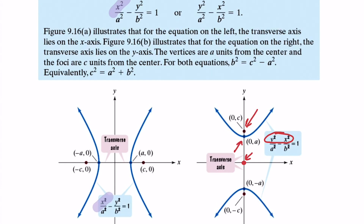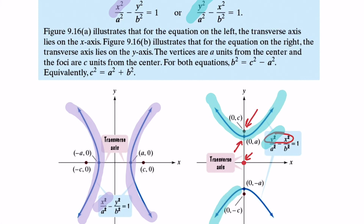If on the other hand it leads with y squared, then the hyperbola is concave in the y direction. That's how I remember it. Another big difference is in the calculation of the distance from center to focus: c squared equals a squared plus b squared. I should have highlighted that plus sign right in the middle — watch out for that in your calculation of the distance from the center to the foci.